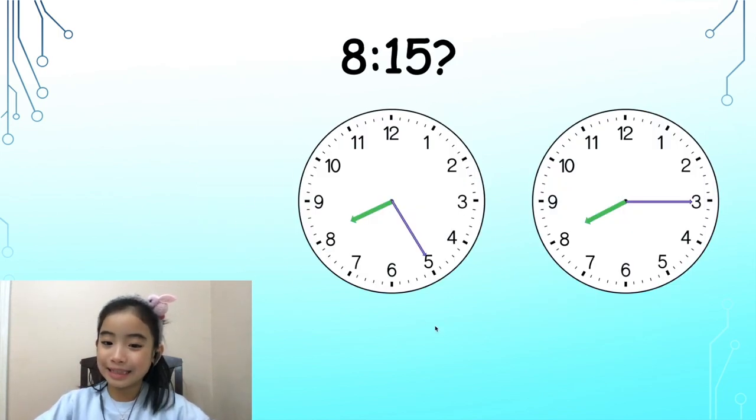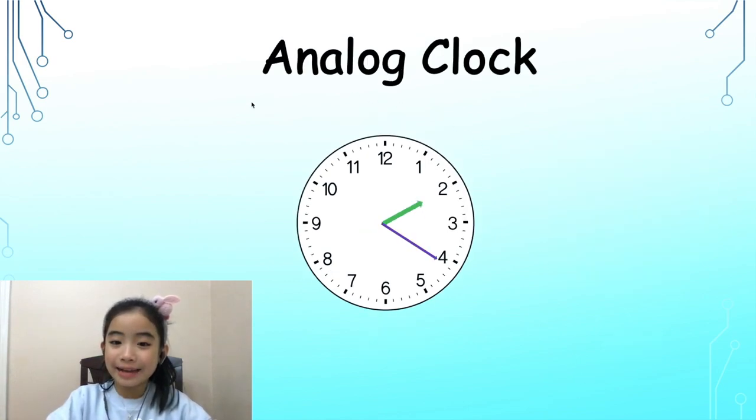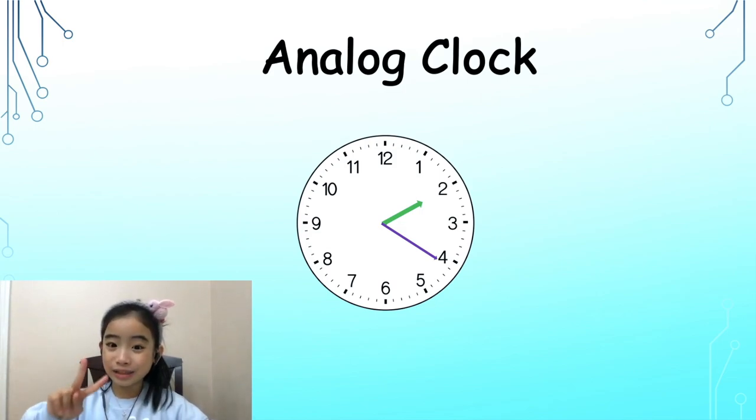First, let's look at this question. Which clock represents 8:15? Clock A or Clock B? This is an analog clock face. It has 12 numbers, 1 to 12. It has two hands. A shorter hand and a longer hand.